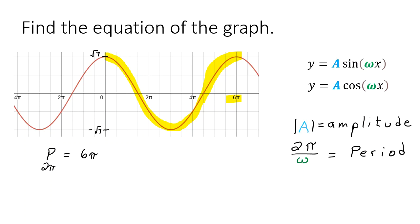So we have two pi divided by what equals six pi. And I think that's going to be a third. But we could write out a few steps here. Multiply both sides by omega divide by six pi. Pies cancel out and we get one third equals omega.